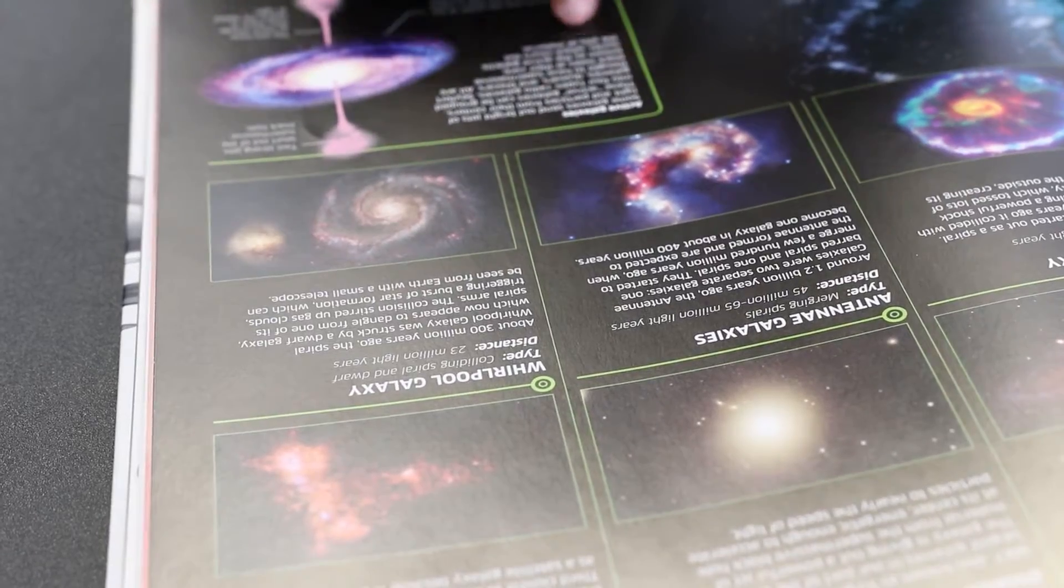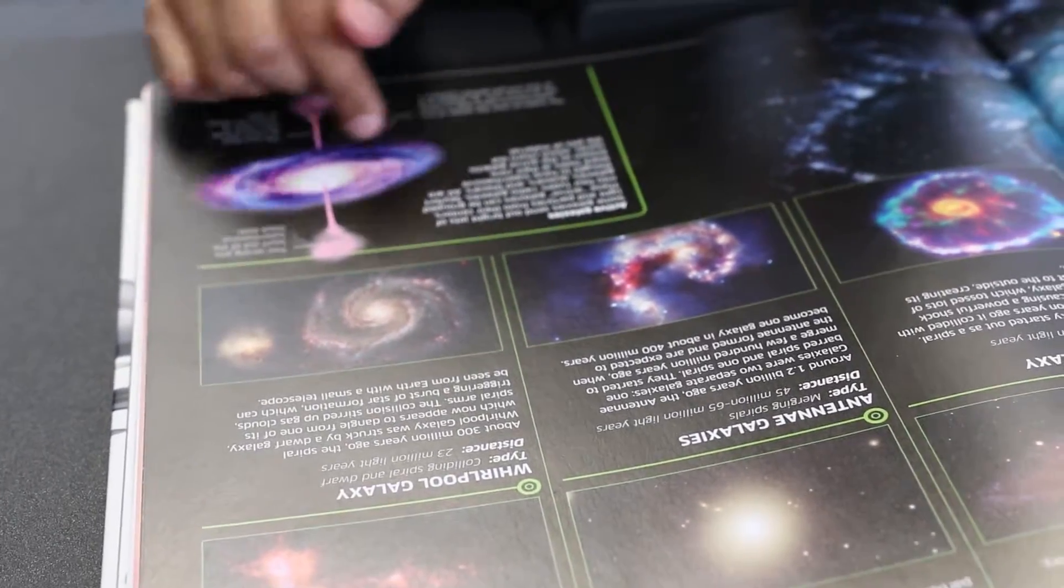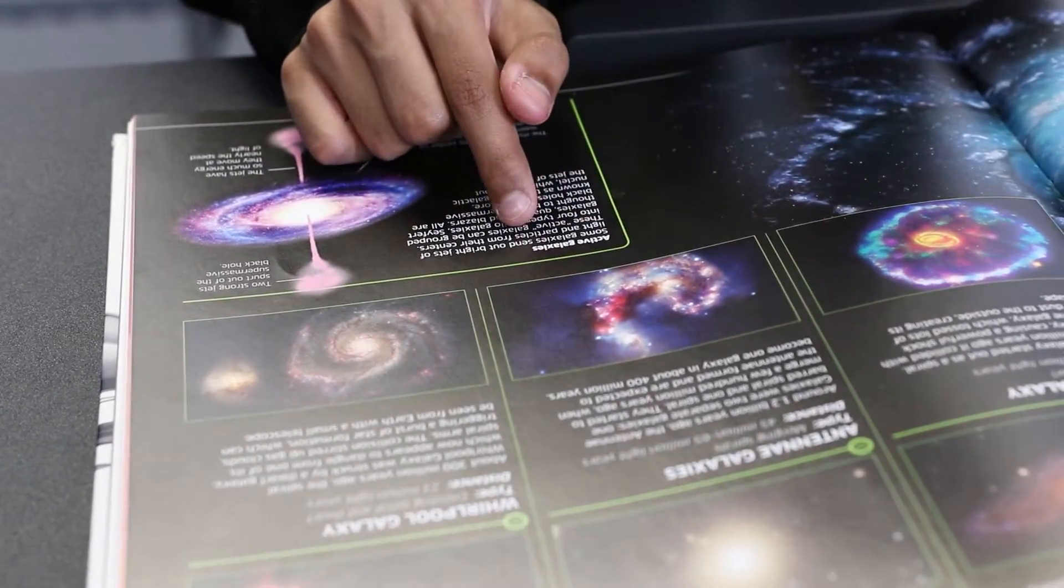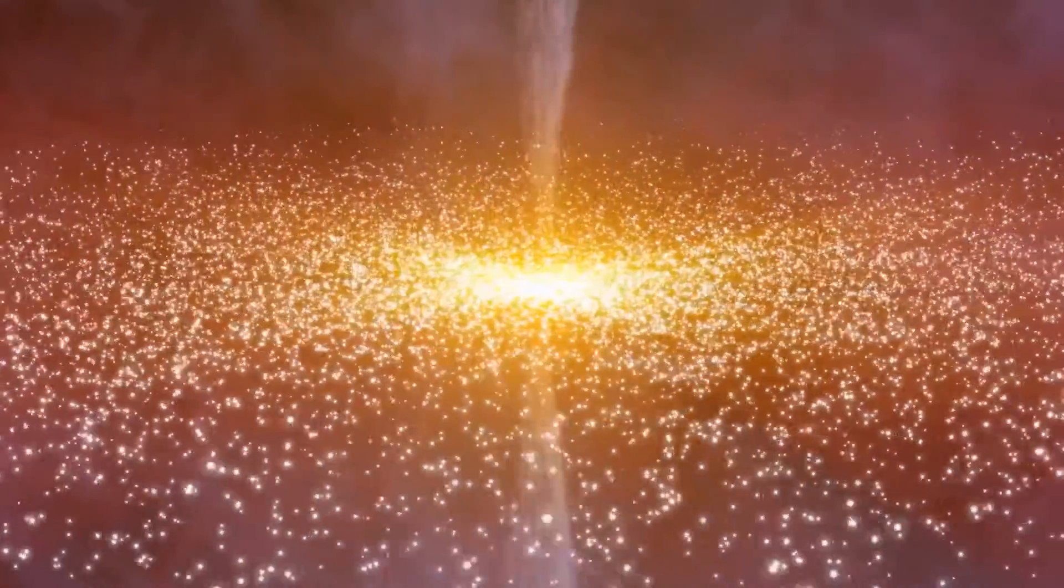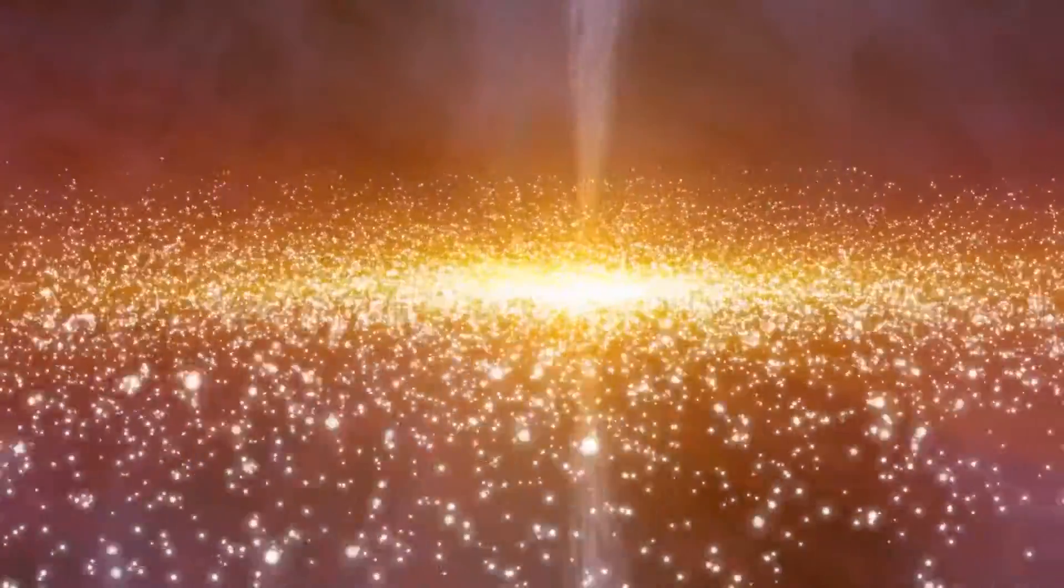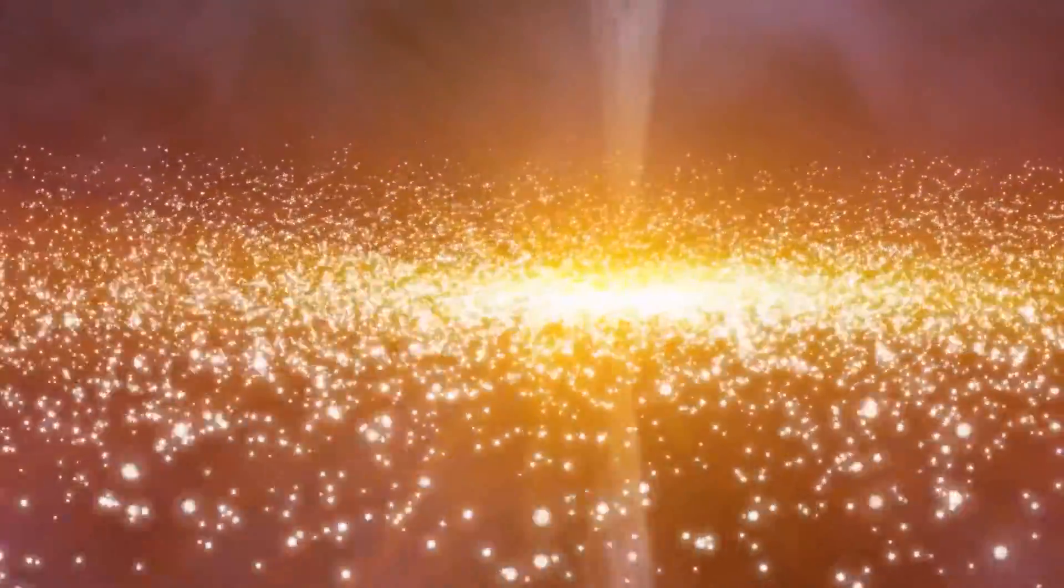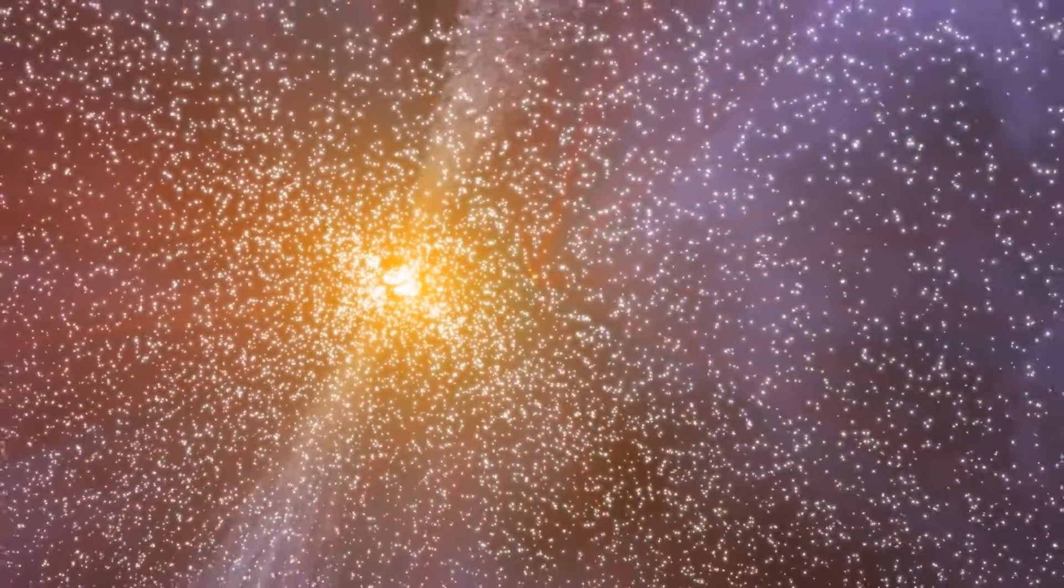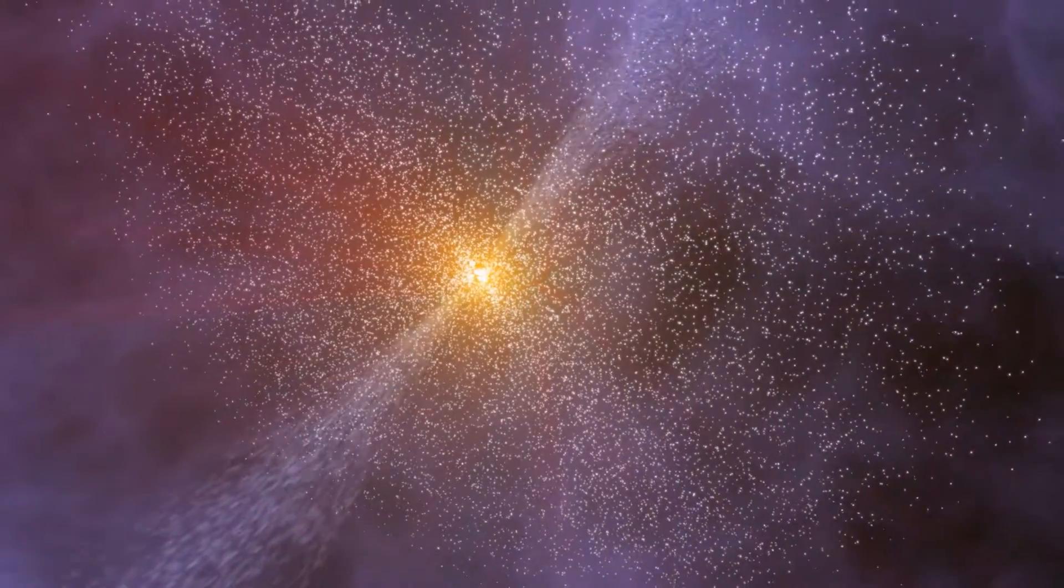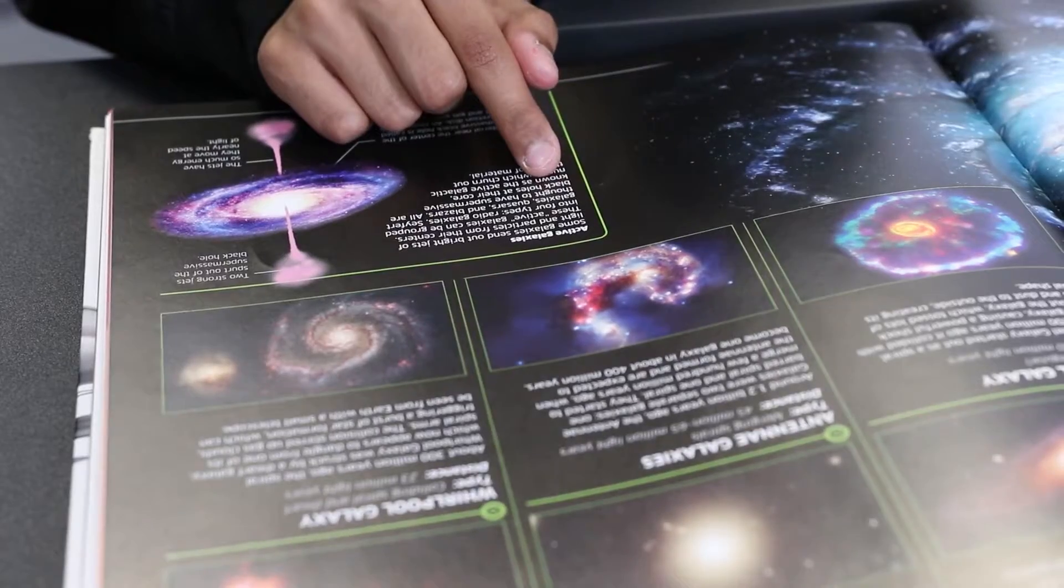Active galaxies. Some galaxies send out jets of light and particles from the center. These active galaxies can be grouped into four types: radio galaxies, Seyfert galaxies, quasars, and blazars. All are thought to have a supermassive black hole in their core.